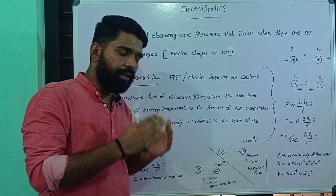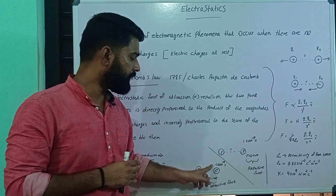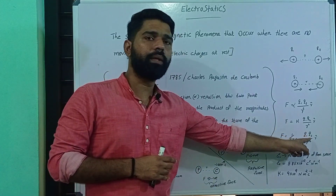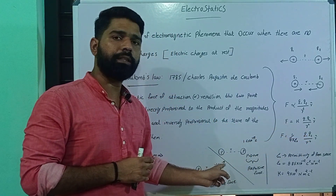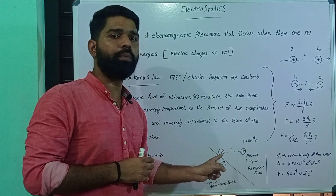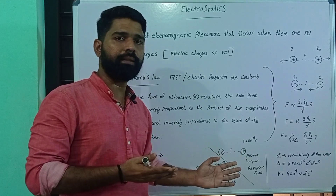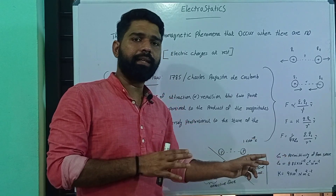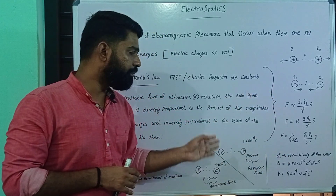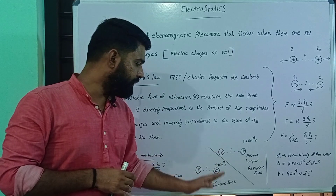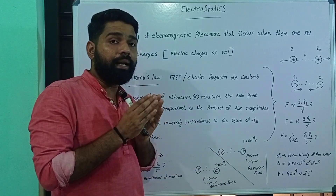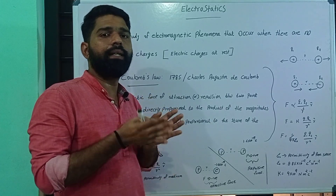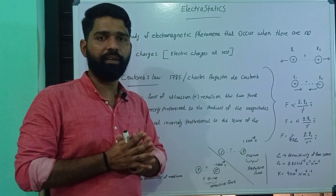If we consider two electrons, the electron charge is −1.6 × 10⁻¹⁹ C. So q1 = −1.6 × 10⁻¹⁹ and q2 = −1.6 × 10⁻¹⁹. Minus into minus gives plus, so the value of F becomes positive. The value of F negative means attractive force; the value of F positive means repulsive force.